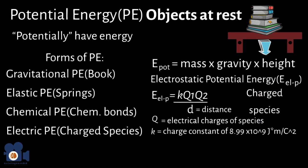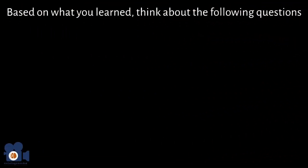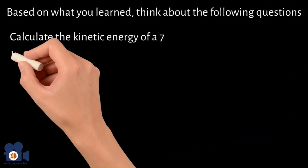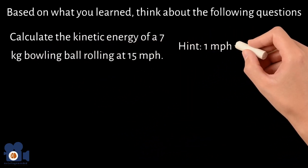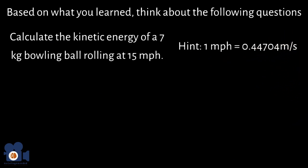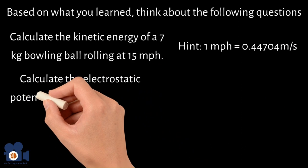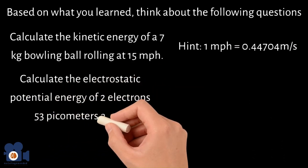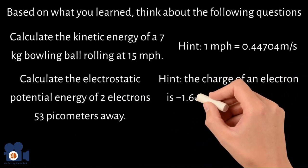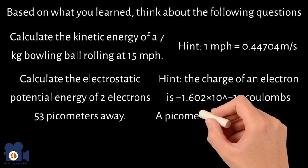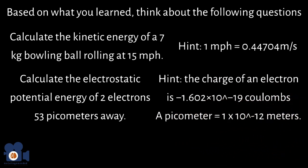I hope this explanation helps. Based on what you learned, think about the following questions: Calculate the kinetic energy of a 7-kilogram bowling ball rolling at 15 miles per hour — hint: 1 mile per hour equals 0.44704 meters per second. And calculate the electrostatic potential energy of 2 electrons 53 picometers apart — hint: the charge of an electron is −1.602 × 10⁻¹⁹ coulombs, and one picometer equals 1 × 10⁻¹² meters.